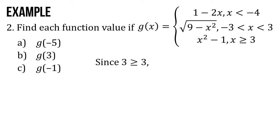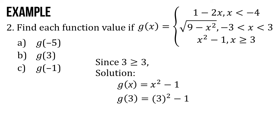Next, letter B: g of 3. Since 3 is greater than or equal to 3, we're going to use x squared minus 1. So g of x equals x squared minus 1. g of 3 equals 3 squared minus 1. g of 3 equals 9 minus 1. So g of 3 is equal to 8.